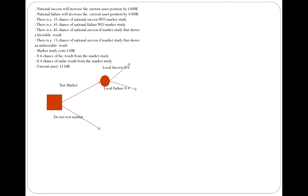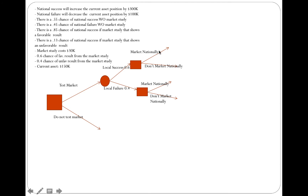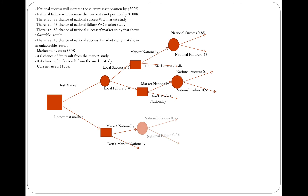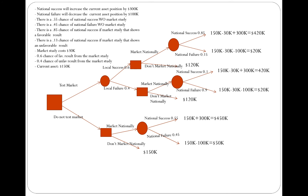If we test the market, the result is going to be success or failure — 60% chance for success and 40% for failure. If locally successful, we can decide whether to market nationally or not, and the same decision applies if the local study results in failure. After testing the market, if we are locally successful and decide to market nationally, the actual result might be success or failure. That was the final decision tree with all costs considered for the company.